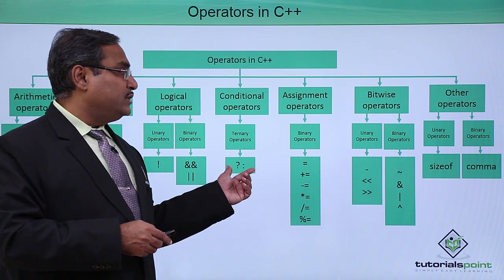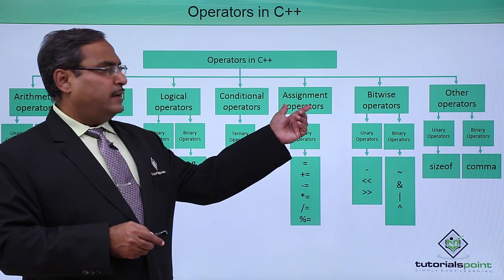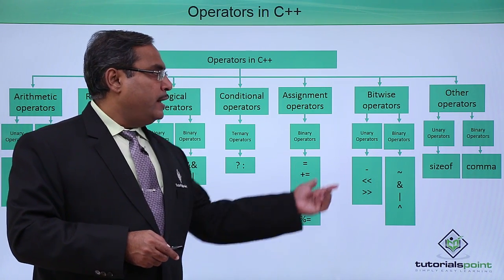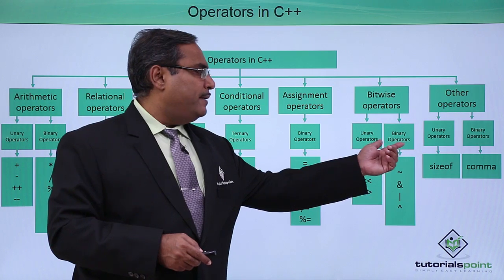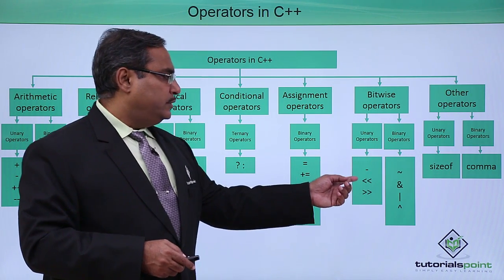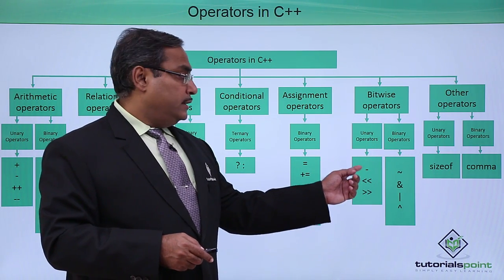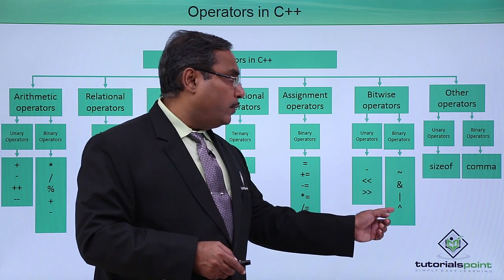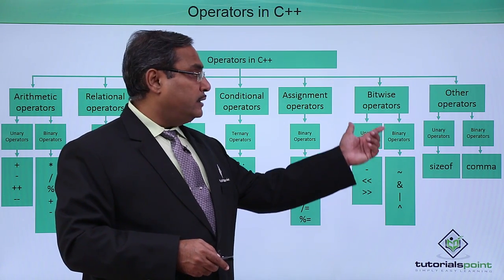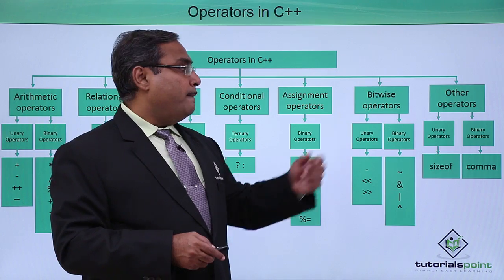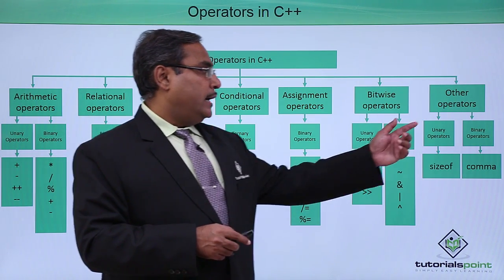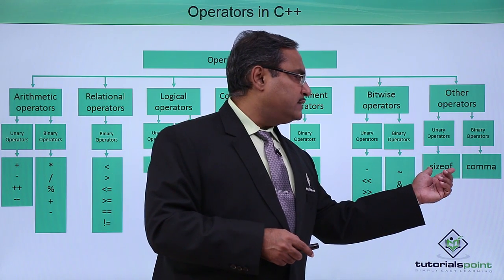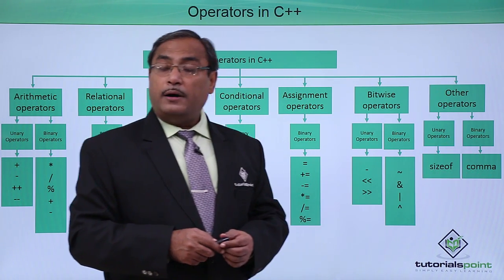Next one is our assignment operators, where binary operators fall in this category. Then we have bitwise operators — both unary and binary. This is the list of unary bitwise operators and this is the list of binary bitwise operators. Other operators can be of the type unary and binary — one is sizeof and another one is the comma operator.